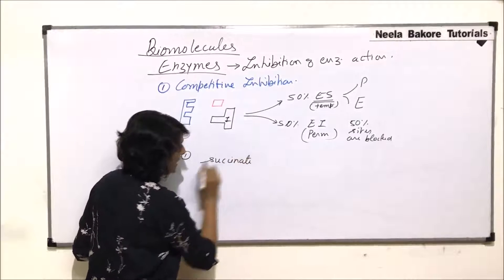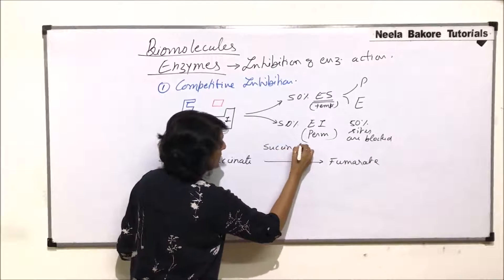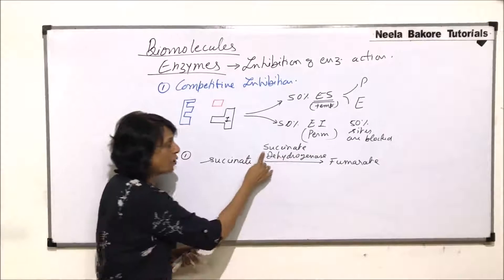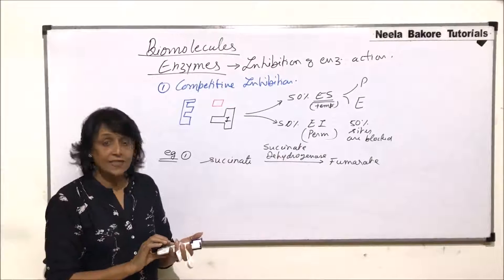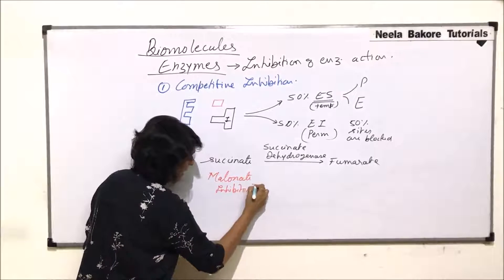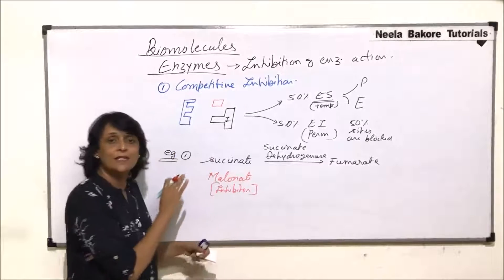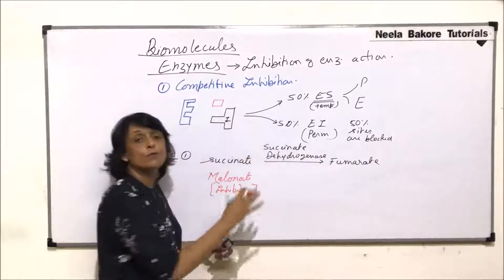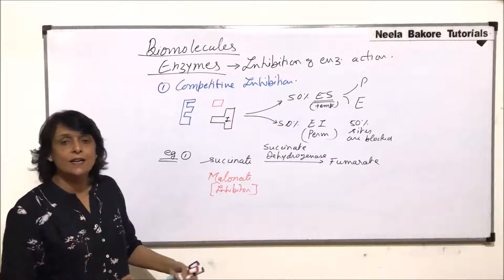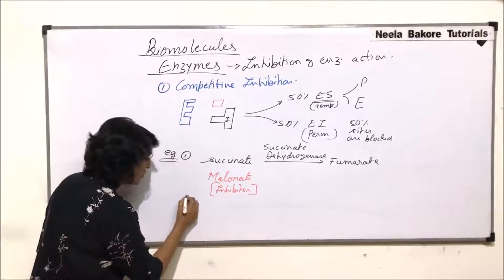Two classic examples illustrate competitive inhibition. In the first, succinate is normally converted into fumarate by the enzyme succinate dehydrogenase. All active sites of this enzyme would normally be occupied by succinate. However, when malonate acts as the inhibitor — if malonate is added — 50% of the enzyme's sites are occupied by malonate and approximately 50% by succinate. The amount of fumarate produced goes down by 50% initially, and then continues decreasing until very little fumarate is synthesized.